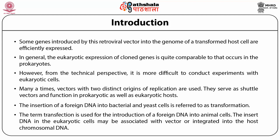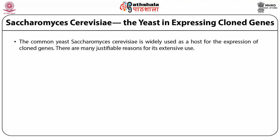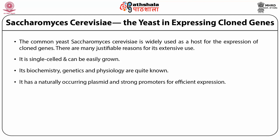The insert DNA in eukaryotic cells may be associated with a vector or integrated into the host chromosome. Saccharomyces cerevisiae is the yeast widely used for expressing cloned genes. There are many justifiable reasons for its extensive use: it is a single-celled organism that can be easily grown; its biochemistry, genetics, and physiology are well understood; it has a naturally occurring plasmid and strong promoters for efficient expression; and it can bring about many post-translational changes in proteins.